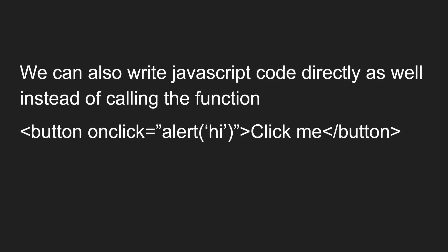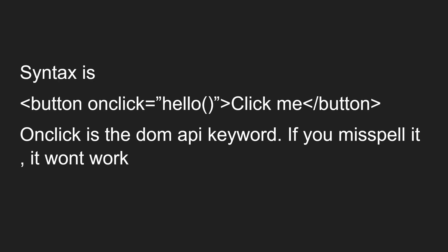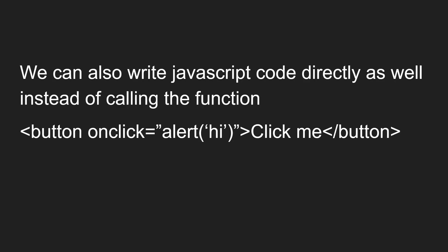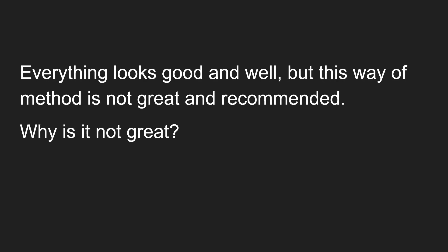We can also write JavaScript code directly as the attribute value instead of calling a function. For example, onclick is equal to hello where hello is a JavaScript function, or we can write onclick="alert('hi')" — that is JavaScript code directly. When you click on the button, it will show you the 'hi' message. So you can call a JavaScript function or write JavaScript code directly.